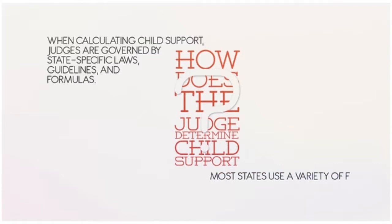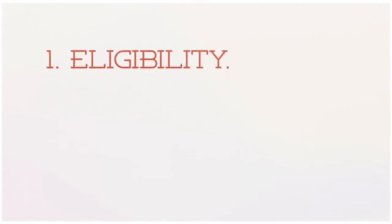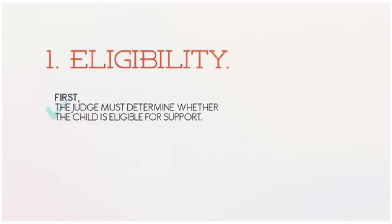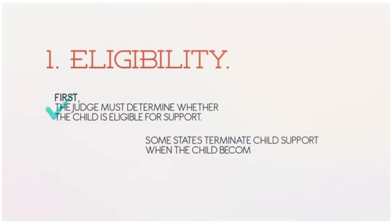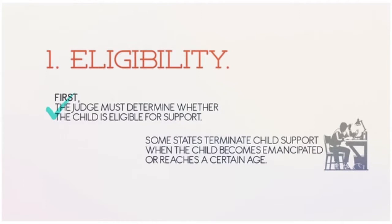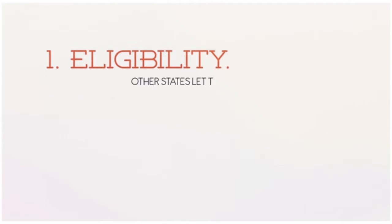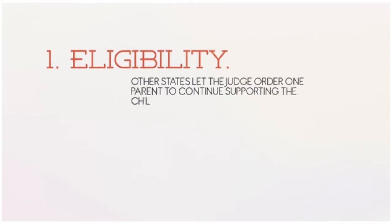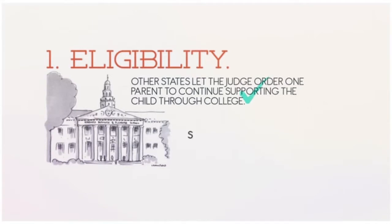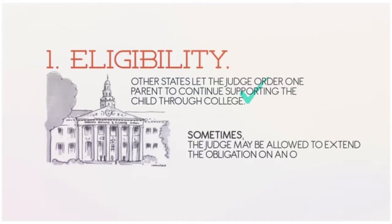Most states use a variety of factors to calculate support, including: 1. Eligibility. First, the judge must determine whether the child is eligible for support. Some states terminate child support when the child becomes emancipated or reaches a certain age. Other states let the judge order one parent to continue supporting the child through college. Sometimes the judge may be allowed to extend the obligation on an open-ended basis for children with disabilities.